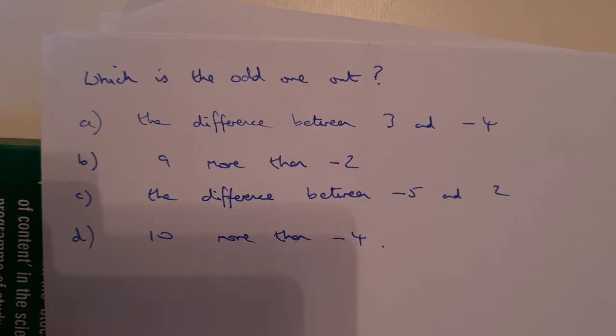It asks you which is the odd one out in these four situations. A: the difference between 3 and minus 4, B: 9 more than minus 2, C: the difference between minus 5 and 2, and D: 10 more than minus 4. I need to carefully work these out so I can see.